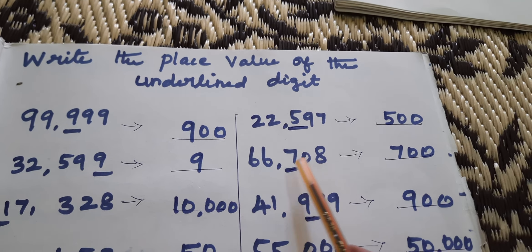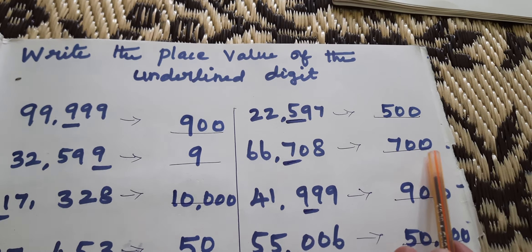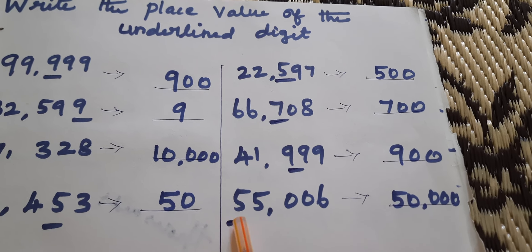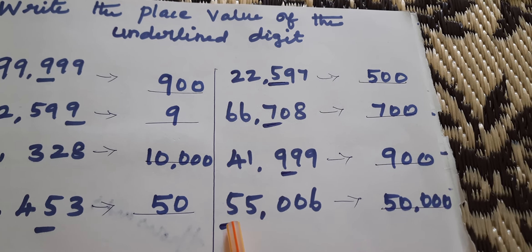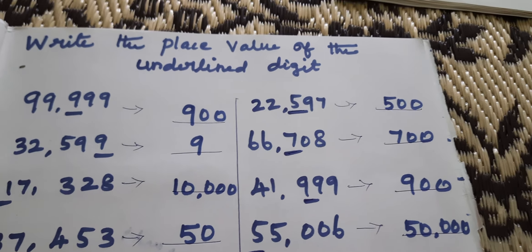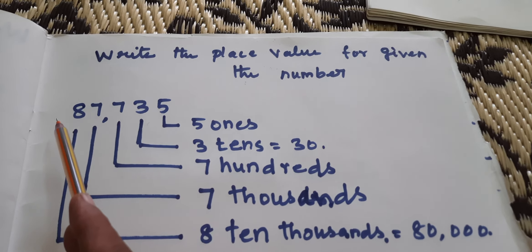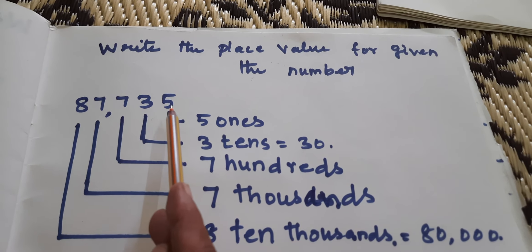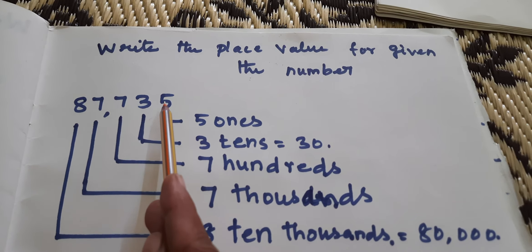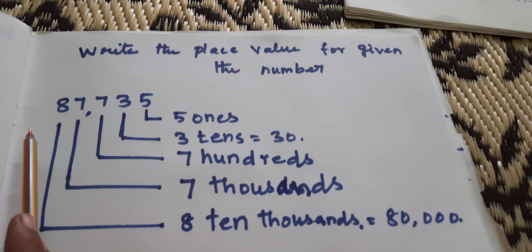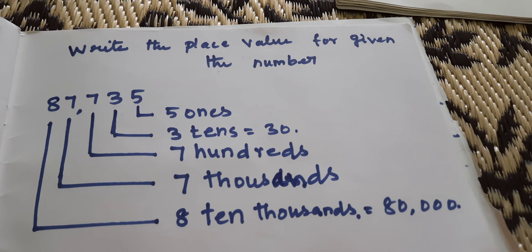66708 — 7 is in the hundreds place, so 700. 41999 — 9 is in the hundreds place, so 900. 55006 — 5 is in the ten-thousands place, so 50000. Next, write the place value for the given number: 87735. 5 is 5 ones, 3 is 3 tens, 7 is 700, 7 is 7000, 8 is 80000. Thank you, kids.